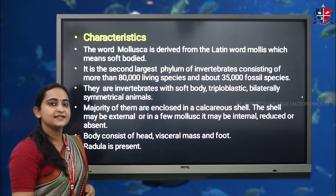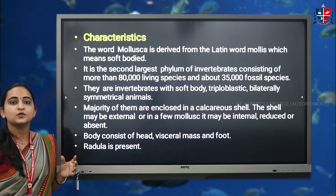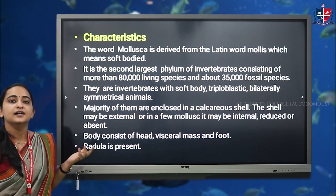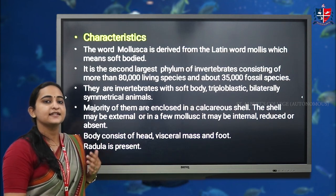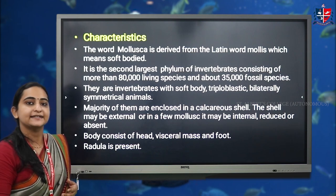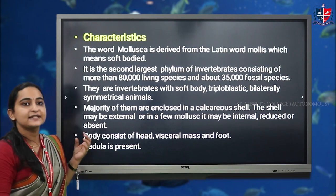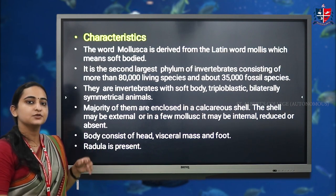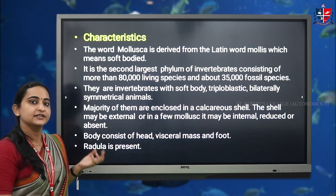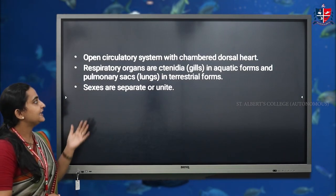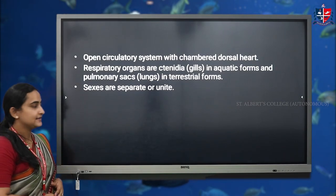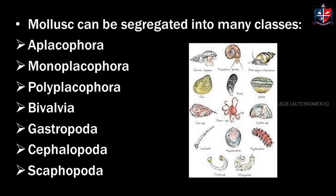Another distinguishing feature of molluscan species is the presence of the radula, which is present in most molluscan species. The radula is a rasping organ present in the buccal cavity — a calcareous ribbon-like structure that helps to scrape and cut food before it enters the digestive system. They have an open circulatory system, and respiration is through ctenidia and pulmonary sacs.